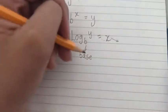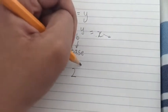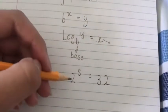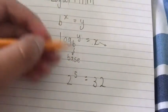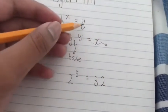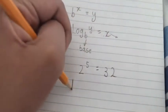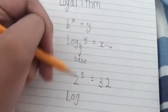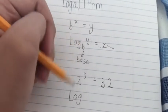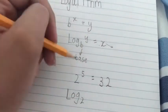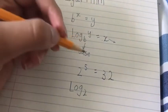So let's start with something easy: 2 to the 5th equals 32. If you want to write this in log form, first identify: 2 is b, 5 is x, and 32 is y. So if we write this in log form — log base 2 — 2 in this case is the base.